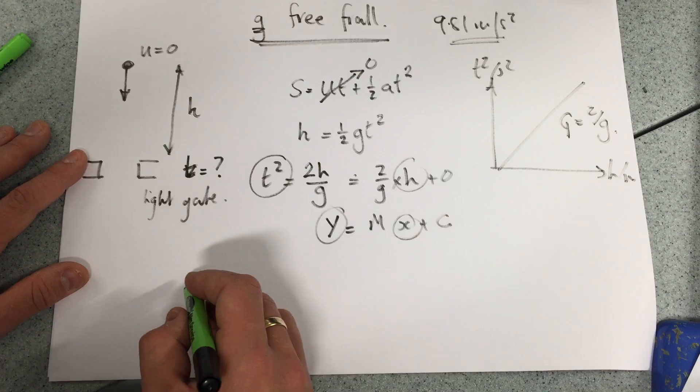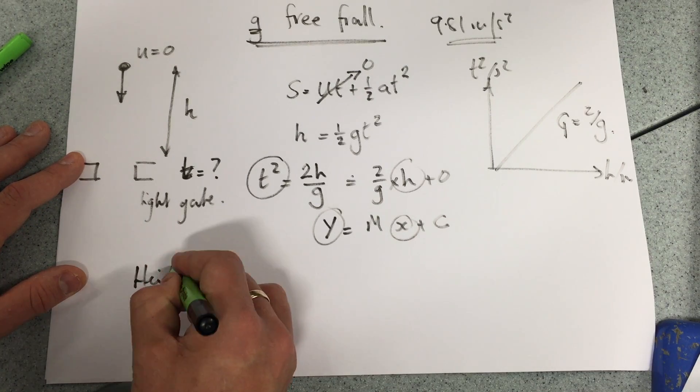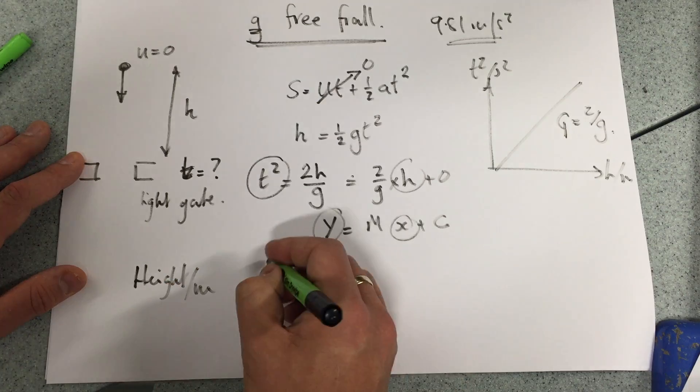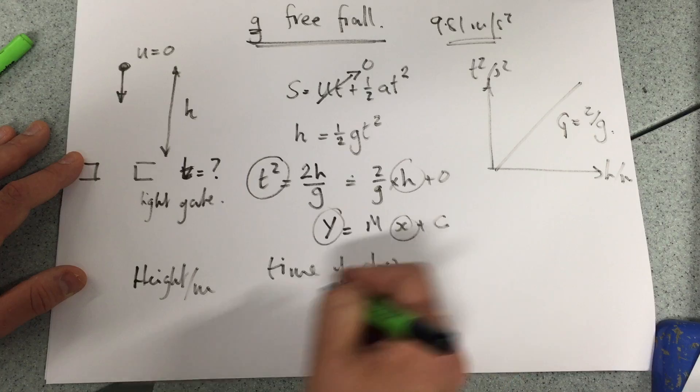Good. So what are we going to have as a table of results? We're going to have the height in metres. We're going to look for the time of drop. Once, twice,